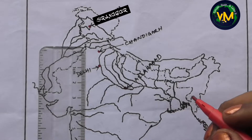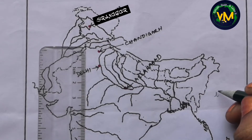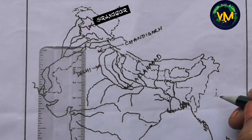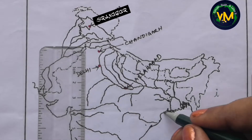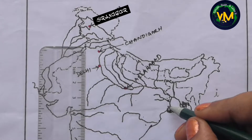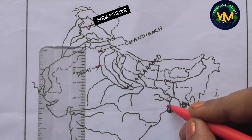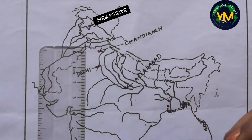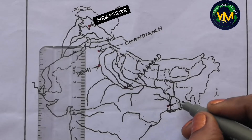Now coming to River Hooghly, that is Kolkata. Can you imagine the cursive writing letter 'I'? In cursive writing we put the letter I like this. So just this is that 'I' shape, and on top of that 'I' — this is Kolkata. It should not touch the coast but should be very, very close to the coast, because it is on River Hooghly. This is Kolkata.